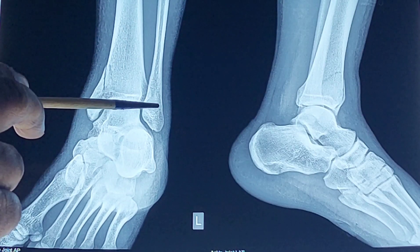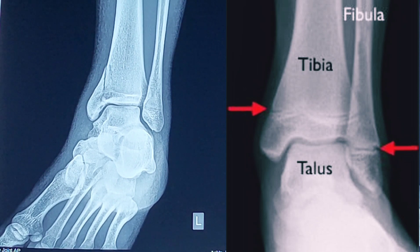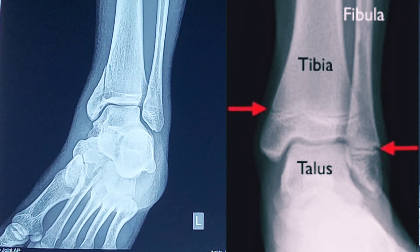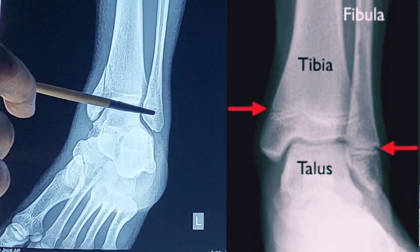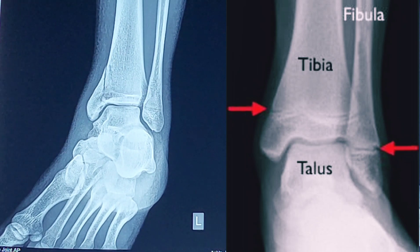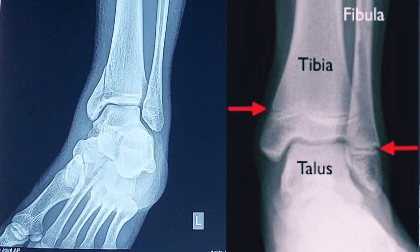The secondary ossification center for the lower end of the fibula appears at about the first to second year after birth. Similarly, the epiphysis for the lower end of the tibia also appears at about the first to second year after birth. However, the union between the diaphysis and the epiphysis occurs in the case of fibula at the age of 15 to 17 years, and for the tibia it is about 17 to 18 years.